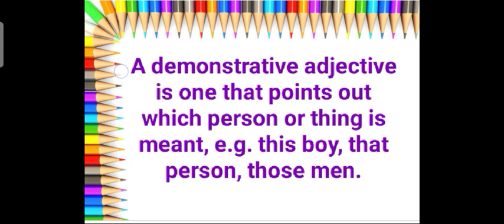Next is a demonstrative adjective. A demonstrative adjective is one that points out which person or thing is meant. For example: this boy, that person, those men. This and these are used for things or persons which are close to us.